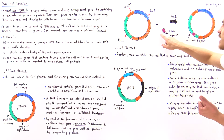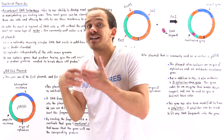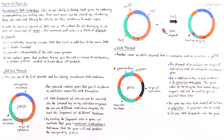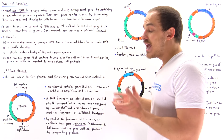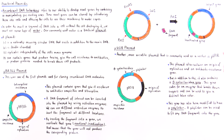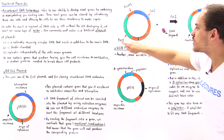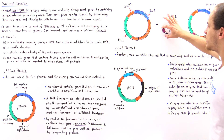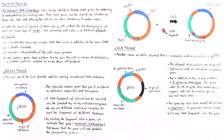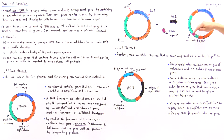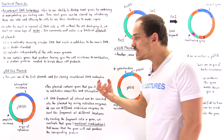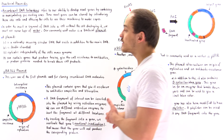Suppose we have a recombinant DNA fragment we want to replicate and we insert it into the PBR322 plasmid using the PST1 restriction enzyme. This cleaves within the green gene and we insert the fragment there, producing a modified plasmid. Notice that because the insertion is inside the green gene, the green gene is now inactivated. But because the blue gene contains no insertion, it still produces the protein giving the cell resistance to tetracycline.